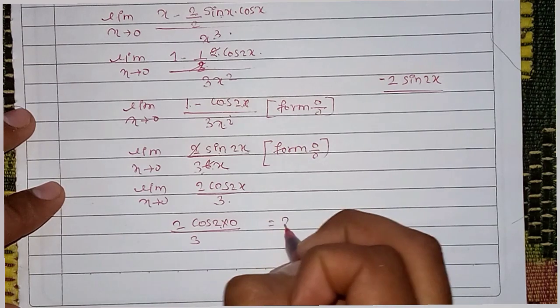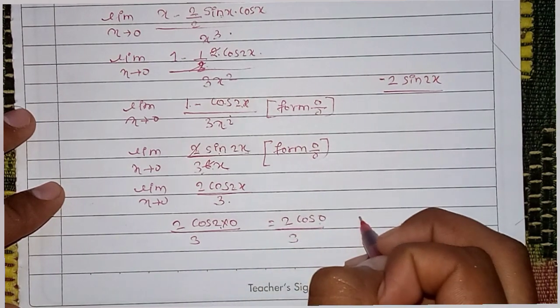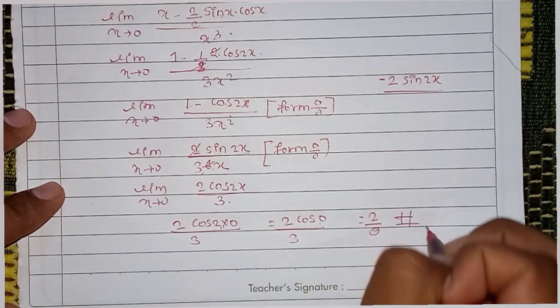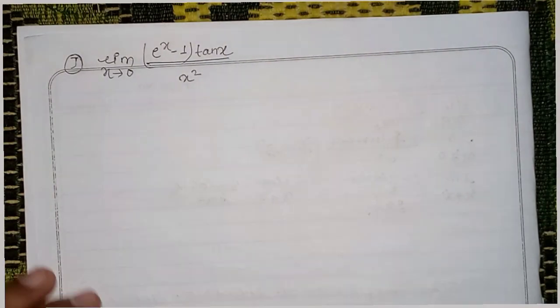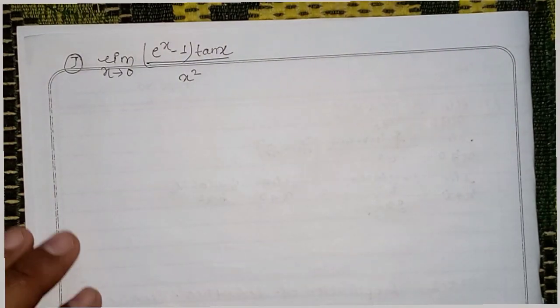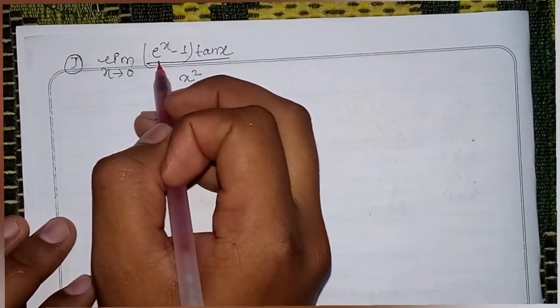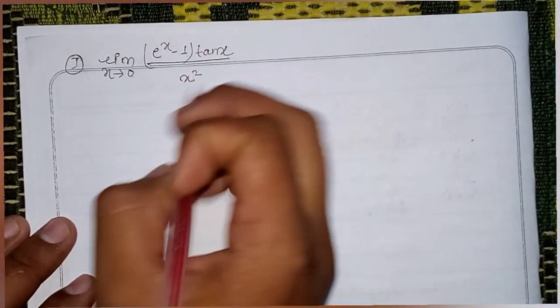2 cos 0, divided by 3 divided by 3, x divided by x square — 2 cos 2x divided by 3. We can solve this question: the same limit x power minus 1, tan x divided by x square. So 1 minus 1 is 0, and 0 into 0 is 0, so we have a 0/0 form.